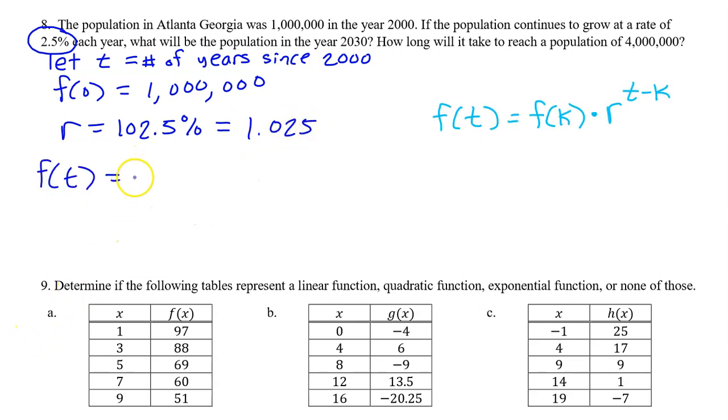We can now write an equation for the population t years after 2000. f(t) will equal f(k), in this case f(0), times r, which is 1.025, to the t minus k power. That's t minus zero in this case. Obviously, we do not need to write the minus zero, so I'm going to take that away. And f(0) is one million, so I'm going to substitute that in instead.